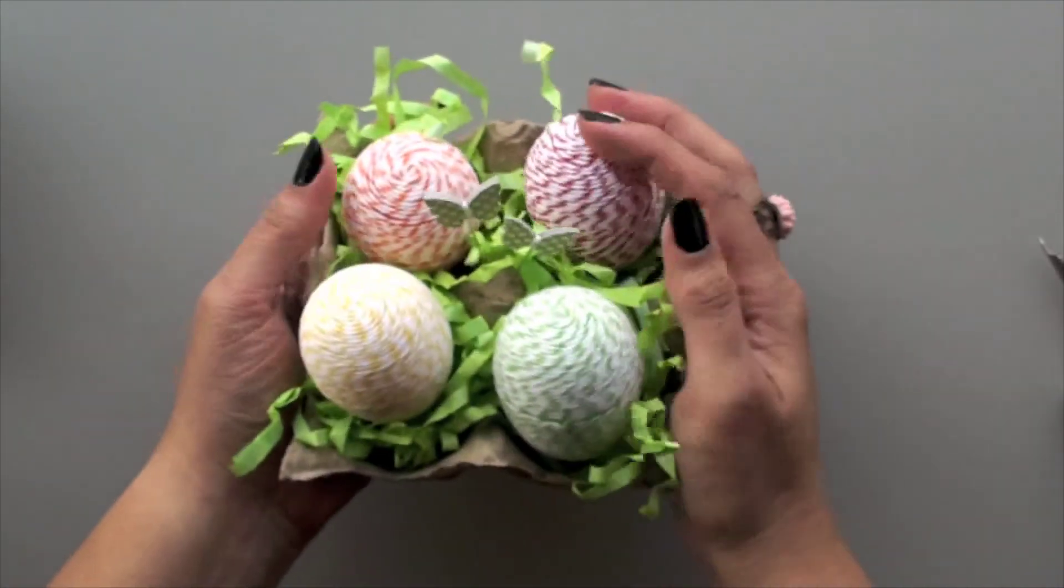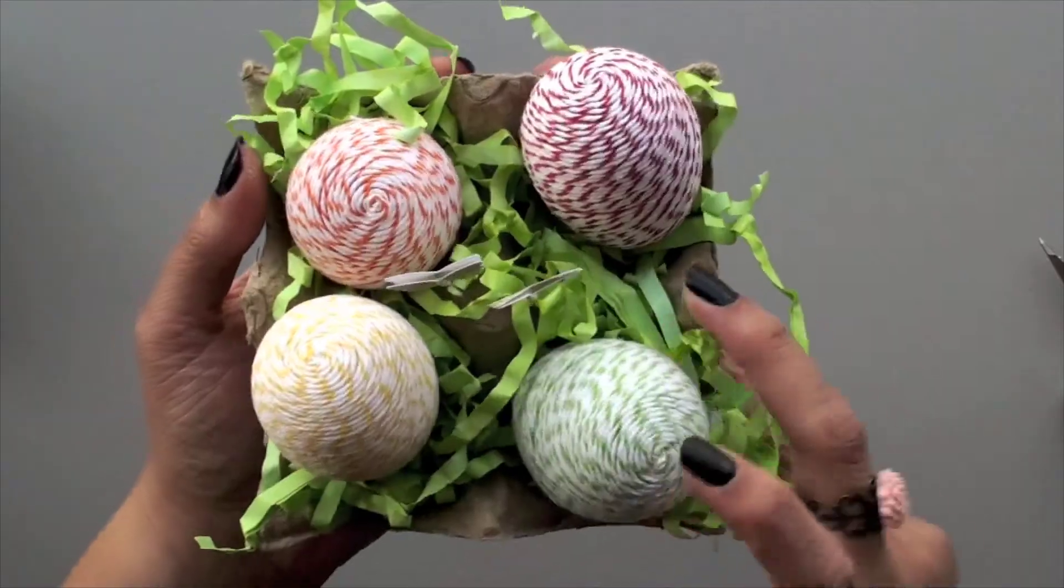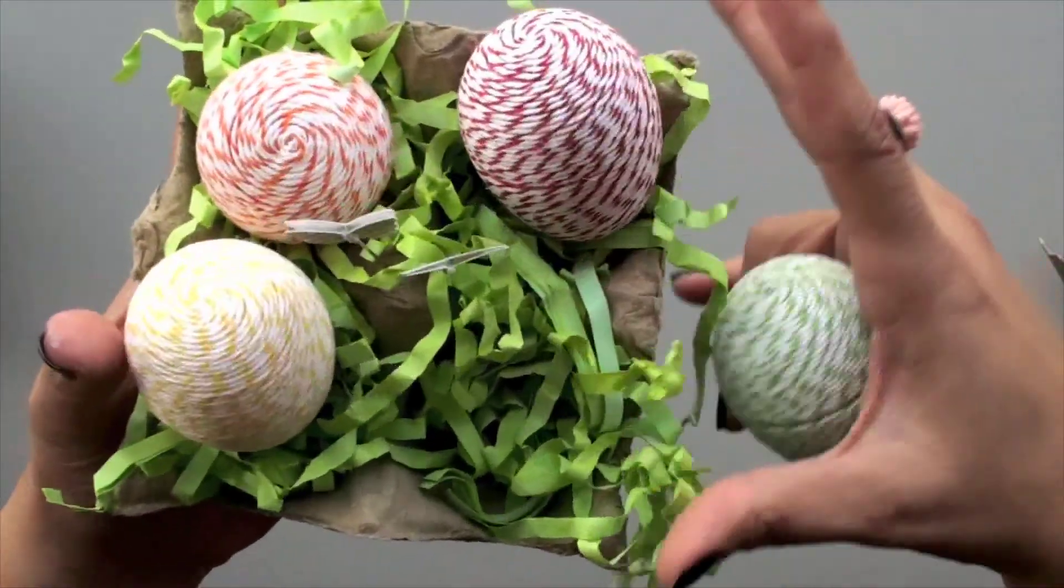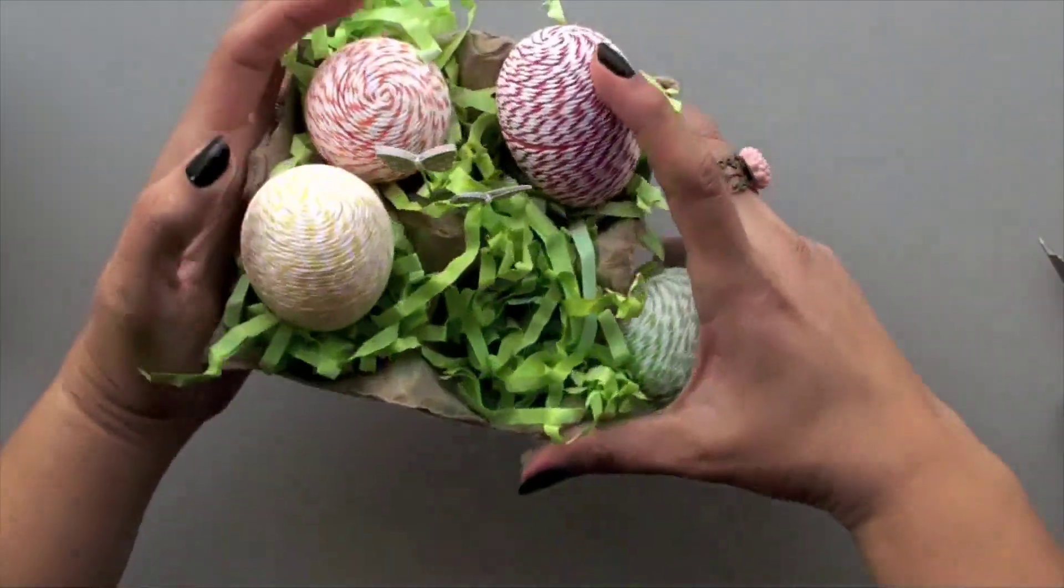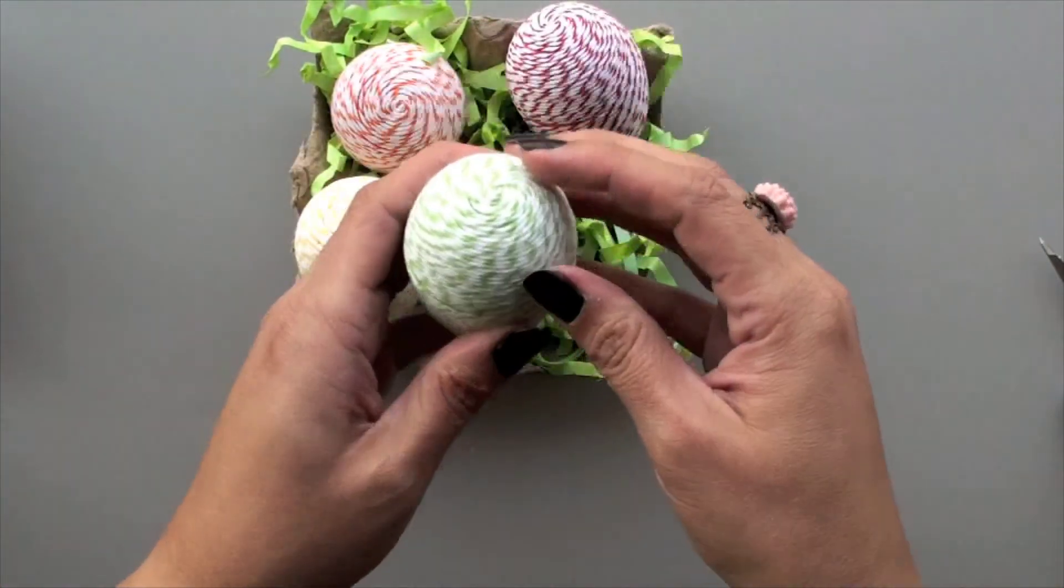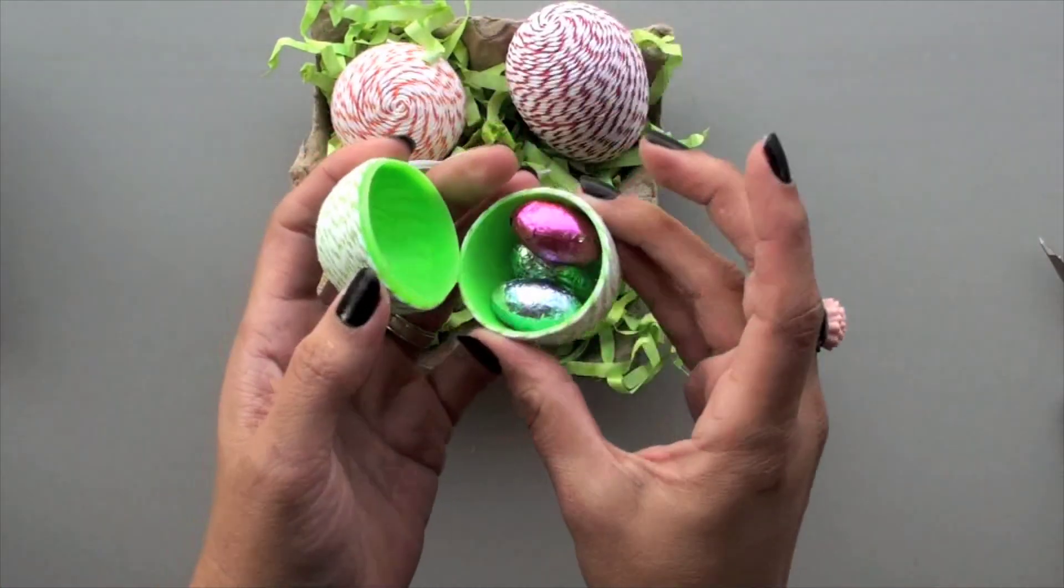And then this is the result. I'm using four different colors. Put them all in a little egg holder. And here's the side view. Added a little bit of butterflies, some paper to it, and then inside are some little eggs.